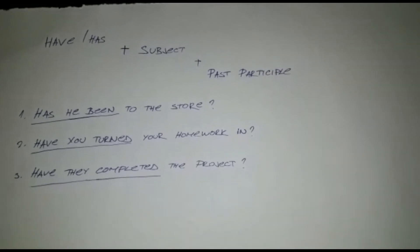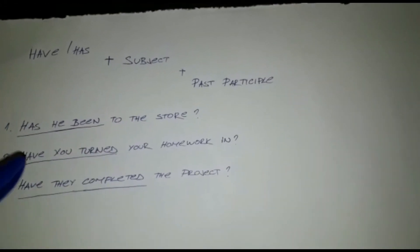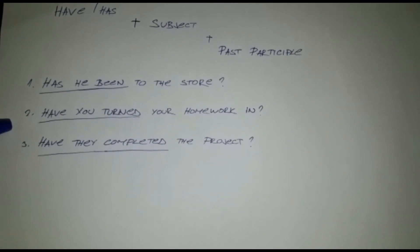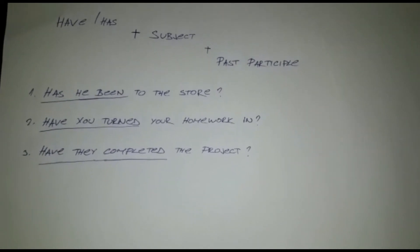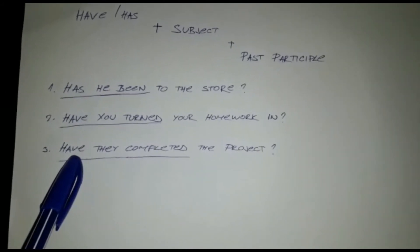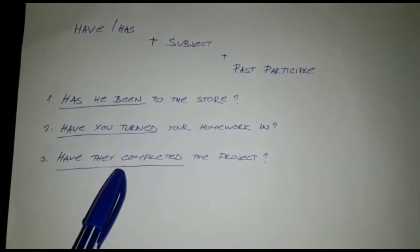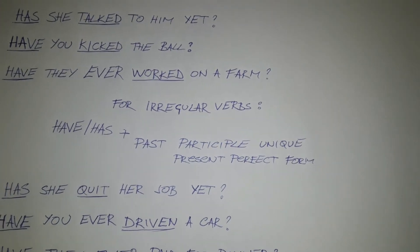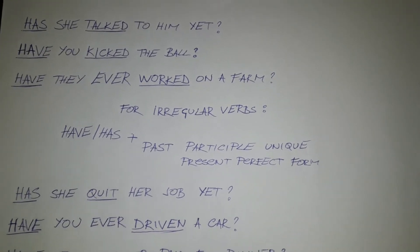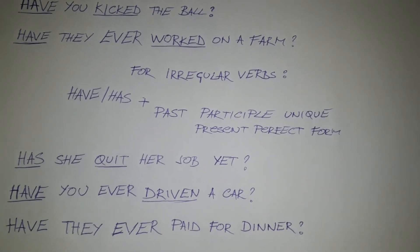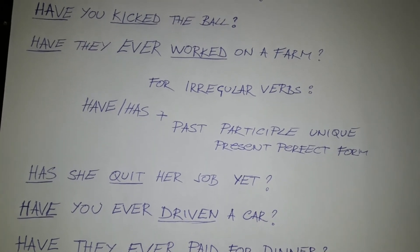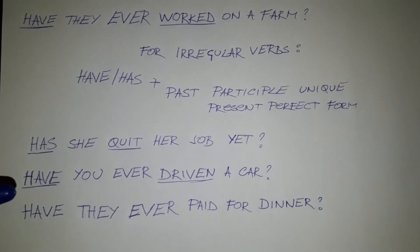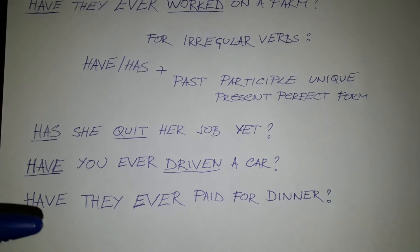And finally we have asking questions in present perfect tense. Instead of the subject being first, we have have/has plus subject plus past participle. For example: Have you turned your homework in? Have they completed the project? Here again we have have/has plus subject plus past participle, which usually ends in -ed but not always. A couple more examples for regular verbs: Has she talked to him yet? Have you kicked the ball? Have you ever worked on a farm? For irregular verbs we also use the auxiliary verb to have and the past participle but now in the unique present perfect form. For example: Has she quit her job yet? Have you ever driven a car? Have they ever paid for dinner?